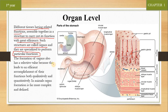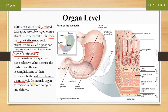The formation of an organ also has selective value because this leads to an efficient accomplishment of their functions both quantitatively and qualitatively. ایک organ کے پاس tissues کی selection specific ہوتی ہے کیونکہ اس نے ایک مخصوص efficiency کے ساتھ کام کرنا ہے۔ In animals, organ formation is far more complex and defined.